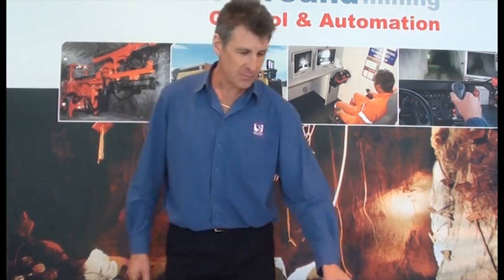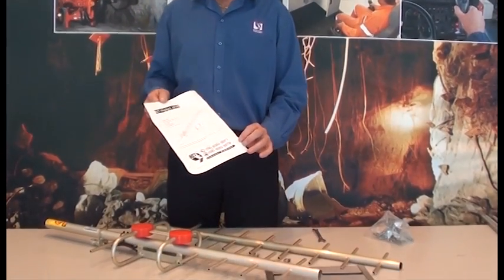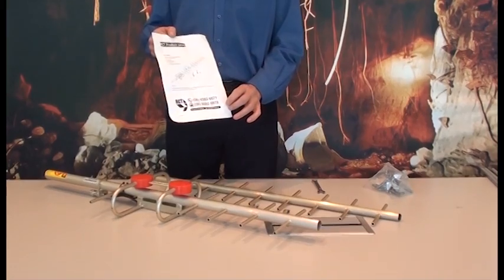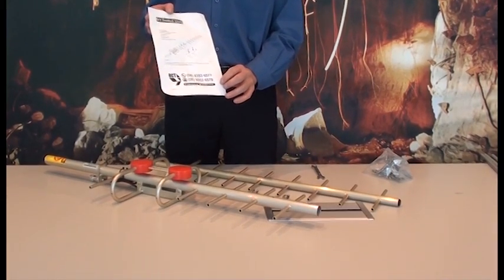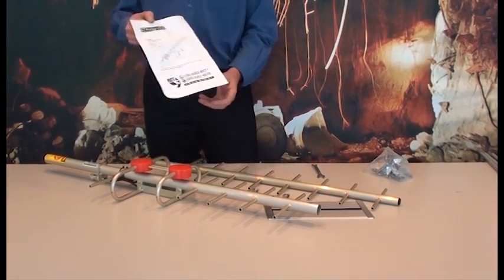Today we're going to go through the Yagi dual frequency split antenna. All the antennas come with an information sheet showing the part number, which is 12145, and all the parts that came inside the packaging for the antenna.